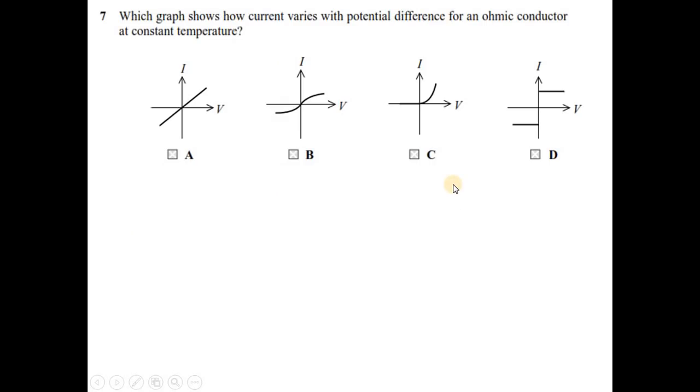Question number 7. Which graph shows how current varies with potential difference for an ohmic conductor at constant temperature? Ohmic conductor at constant temperature means Ohm's law, V is proportional to I. You must have a graph of a straight line for an ohmic conductor at constant temperature. So your option is A.